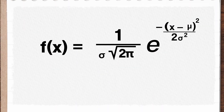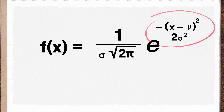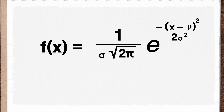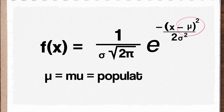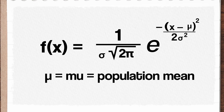Then there's the exponent itself, which is negative one-half times a squared fraction. Unlike E, which is a number, the other symbols you see are stand-ins for things in your data. This funny U-looking thing with a long line is the Greek letter mu, and it stands for the mean of our distribution.